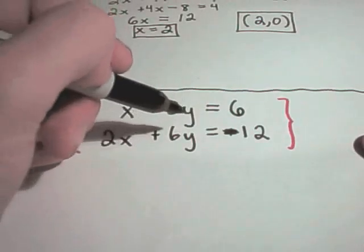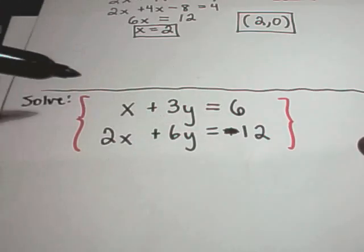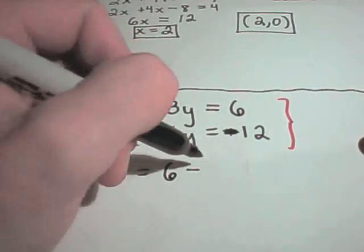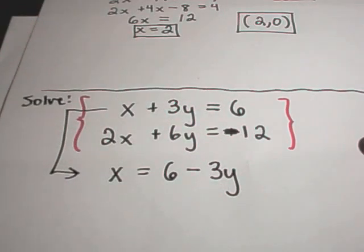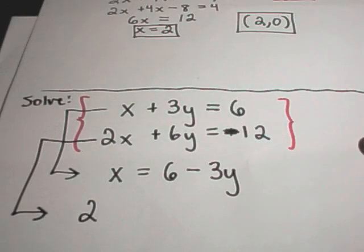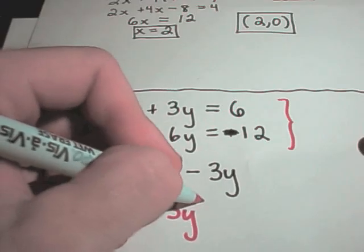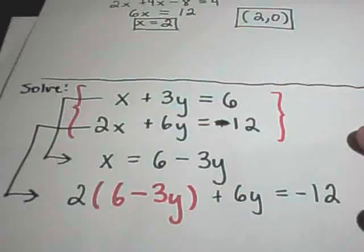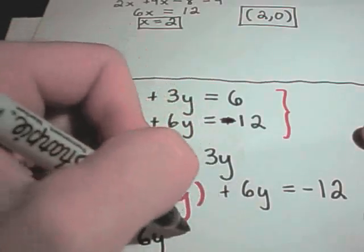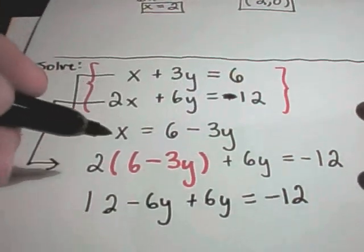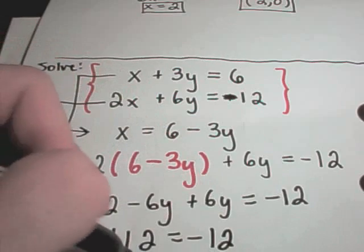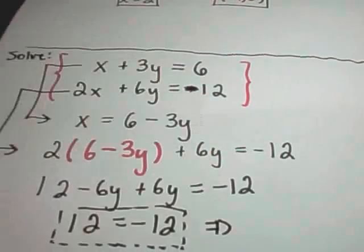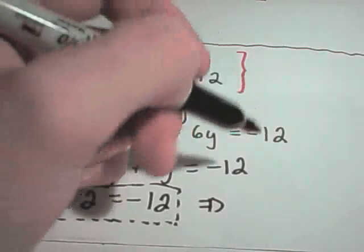Let's do another one: x plus 3y equals 6, and 2x plus 6y equals negative 12. I'm going to take the first equation and solve for x — I'll get x equals 6 minus 3y. Now I'll plug that into the second equation: 2 times (6 minus 3y) plus 6y equals negative 12. That gives me 12 minus 6y plus 6y equals negative 12, which simplifies to 12 equals negative 12. This is a nonsensical statement, so the system has no solution.